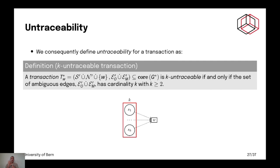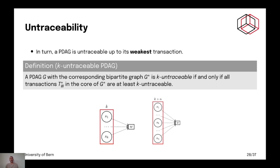So, a transaction is K untraceable if and only if the set of ambiguous edges are cardinal K with K greater or equal to 2. Of course, you cannot have untraceability with K smaller than 2. And a PDAG. Well, a PDAG is actually untraceable up to its weakest transaction. Because remember, the adversary just does random guessing over the smallest witness.